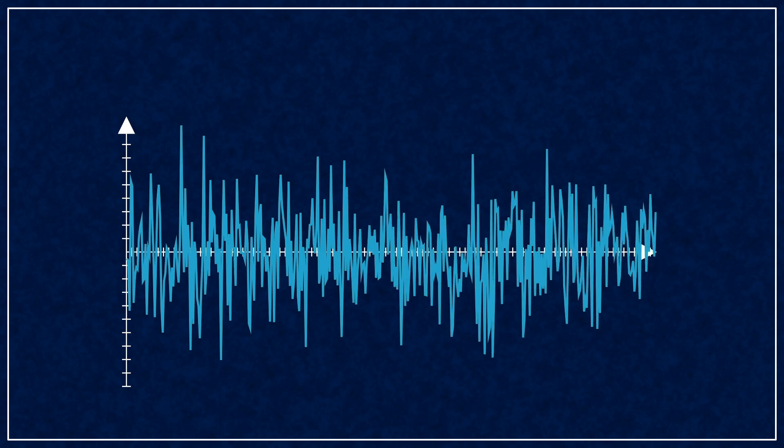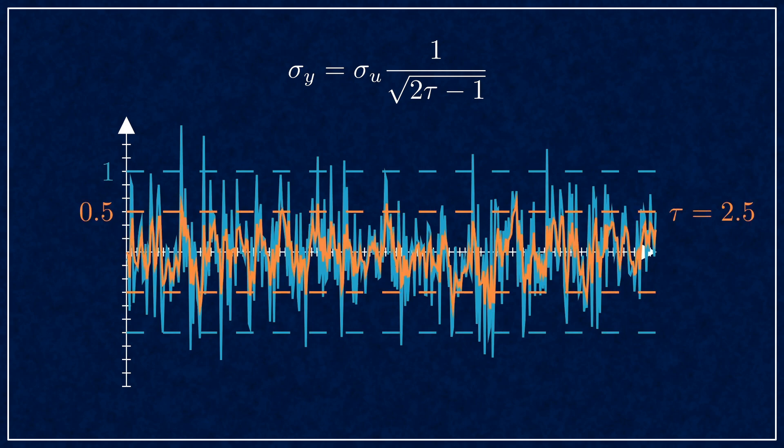Next, noise reduction. If you feed pure white noise into an EMA, you'll reduce the standard deviation by square root of 2 tau minus 1. So with tau equals 2.5, it works out to be square root of 4, that is 2. It cuts the noise down to half amplitude.